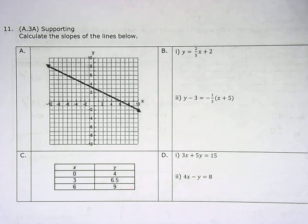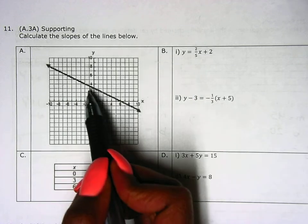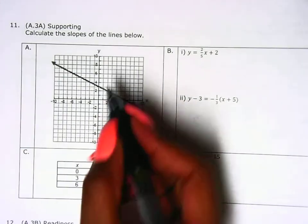Number 11 says calculate the slopes of the lines below. So the first one is a graph, and on a graph we know the slope is rise over run.